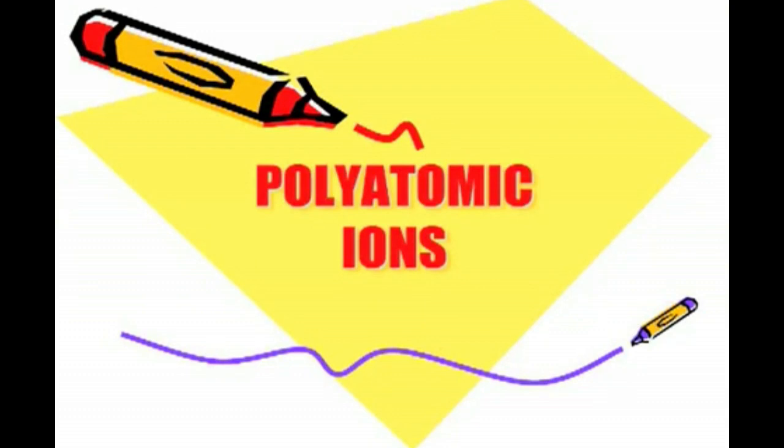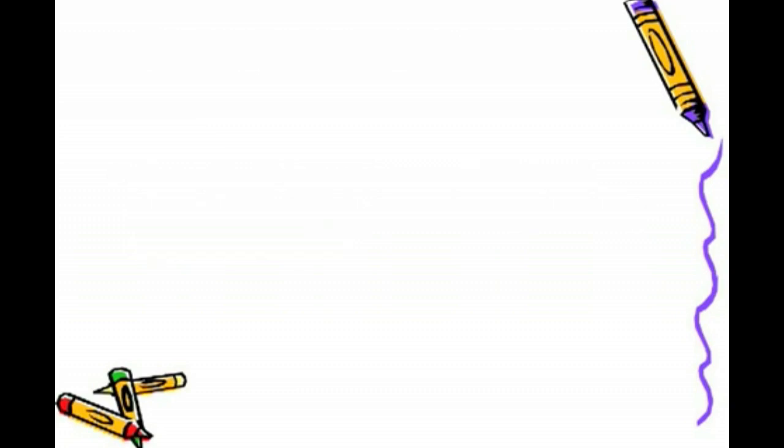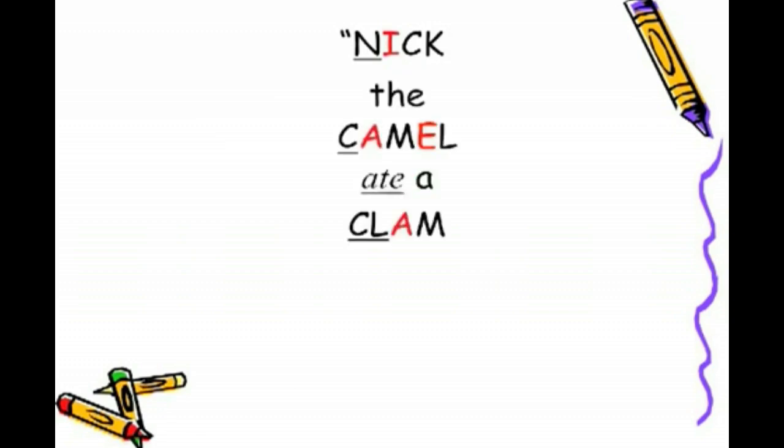Polyatomic ions consist of two or more different nonmetal atoms which are joined by a covalent bond. So let's look at the following phrase: Nick the Camel ate a clam for supper in Phoenix.